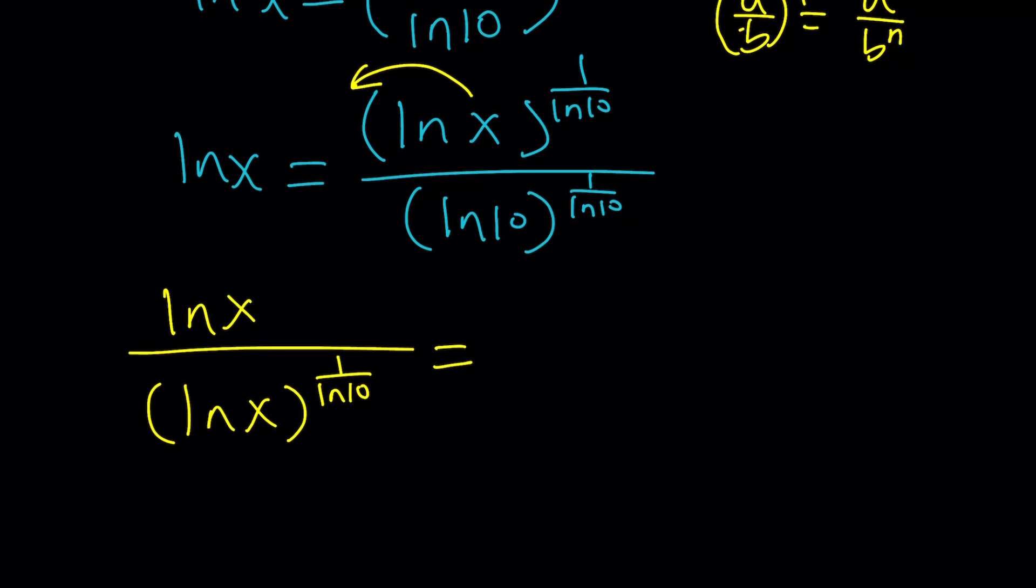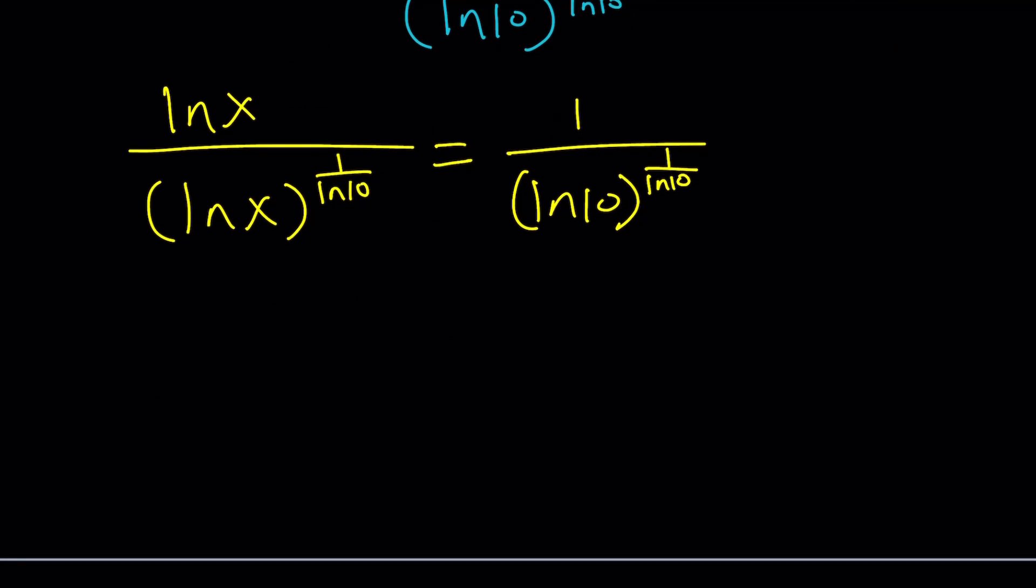Let's bring this over to the left by division and leave this as a fraction. So we're going to have ln x divided by ln x to the power one over ln 10 and on the right hand side I'm getting a constant. Now we have ln x to the first power divided by another power. What do you do with the exponents? You subtract them, don't you? So this is going to be ln x to the power one minus one over ln 10 and that's going to equal one over ln 10 to the power one over ln 10.